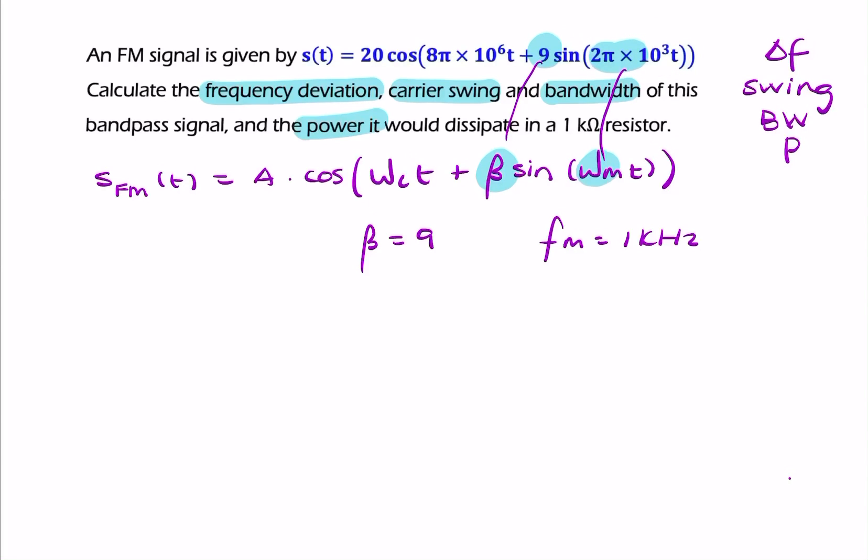Now, in order to find delta f, the frequency deviation, we simply remember that beta is the ratio of delta f to f_m. So delta f is simply beta times f_m, so it's 9 kilohertz. That's one way of finding delta f.